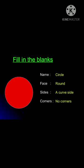A circle. A circle has no sides and no corners. For example, gold coin and ball are circle shapes.